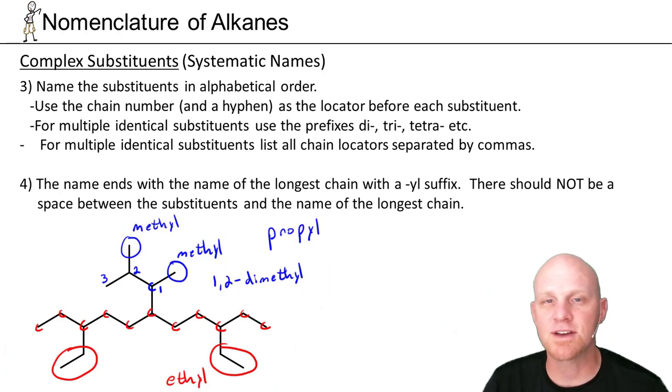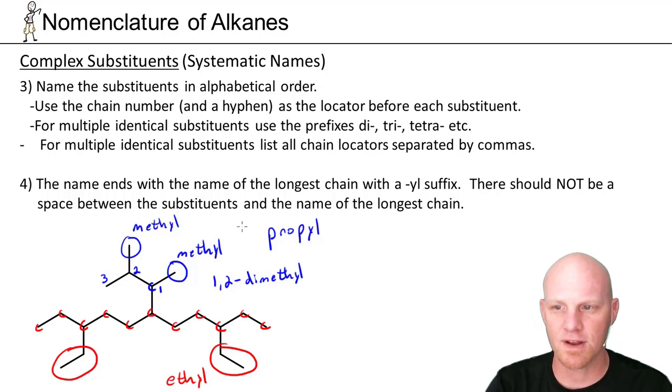So let's put the name of this complex substituent all together here. So rule number 3 talks about naming the substituents in alphabetical order. This should sound familiar. Naming a complex substituent is a lot like just naming an alkane. So the substituent itself has a parent chain sort of of itself. And then it has its own substituents coming off of it. So it's kind of like a substituent with substituents. And we go to name it as such in this case.